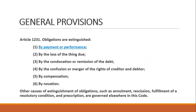Under the law, there are different modes of extinguishing obligations. Under Article 1231, obligations are extinguished: number one, by payment or performance; number two, by the loss of the thing due; number three, by the condonation or remission of the debt; number four, by the confusion or merger of the rights of creditor and debtor; number five, by compensation; number six, by novation.